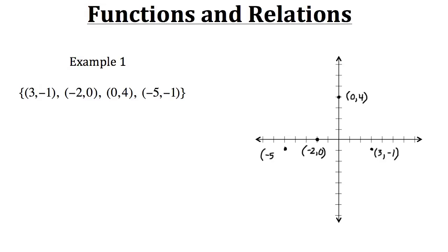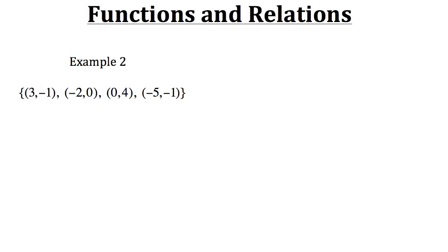So that's the basic idea of a relation and how to graph them. Now let's take a look at another aspect of relations. For example two, we're going to use the same relation but find the domain and range. Finding the domain means we want to see all the possible values for the input within this relation. In this relation we have: three, negative two, zero, and negative five.